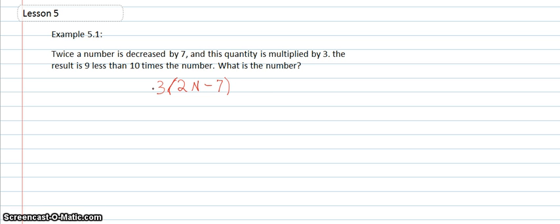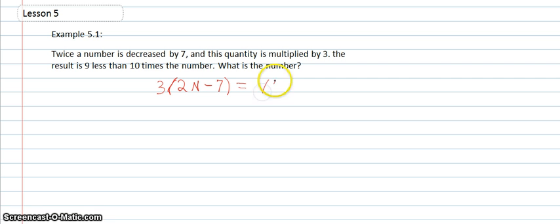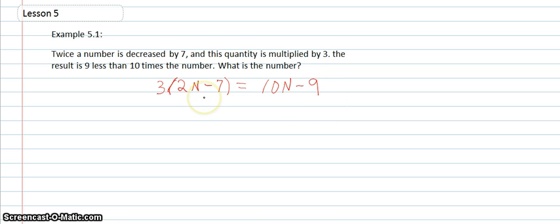It says 'the result is,' which means an equal sign. Then we have '9 less than 10 times the number,' so we multiply the number by 10 — that's 10n — and then it's 9 less, so we have a minus 9 on the right side. From this equation, we'll be able to solve for n.